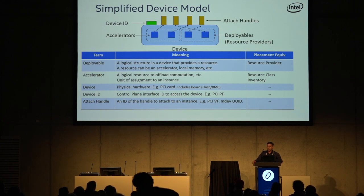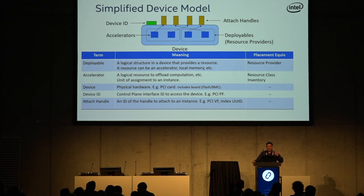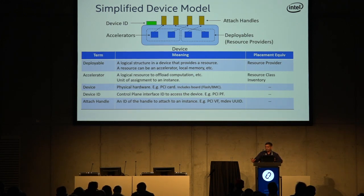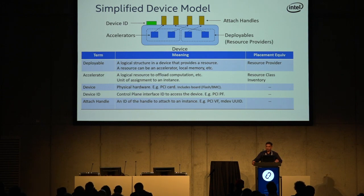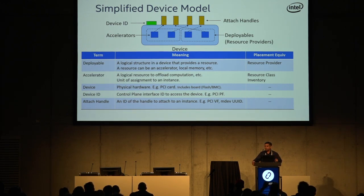Similarly, in an FPGA, each region may contain, say, a gzip bitstream which provides four instances of gzip, and each of those instances would be a separate accelerator. So we have a generalized model of one device with multiple components — which we call deployables — corresponding to resource providers. Each deployable could contain multiple accelerators, which are instances of resource classes. Any property of an individual resource provider, like an FPGA region type or GPU model type, would be expressed as traits.